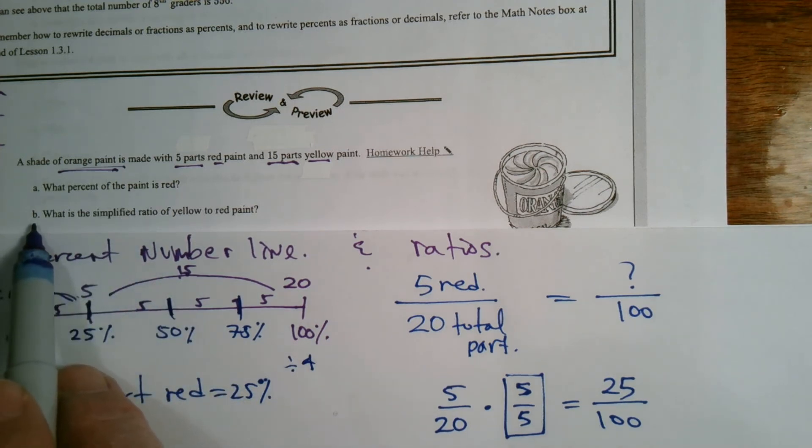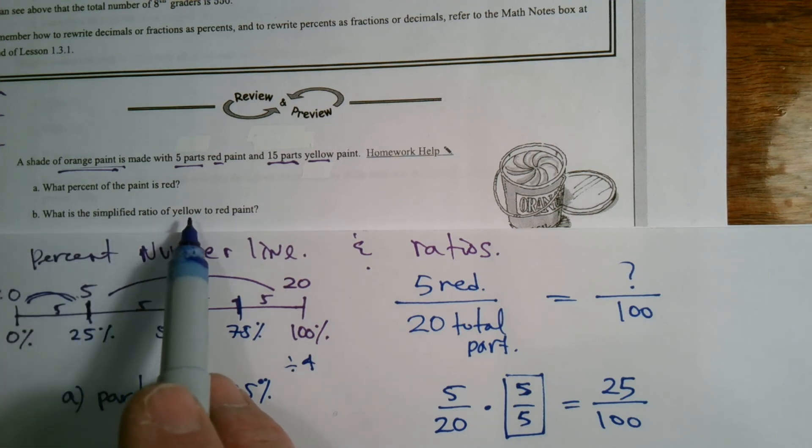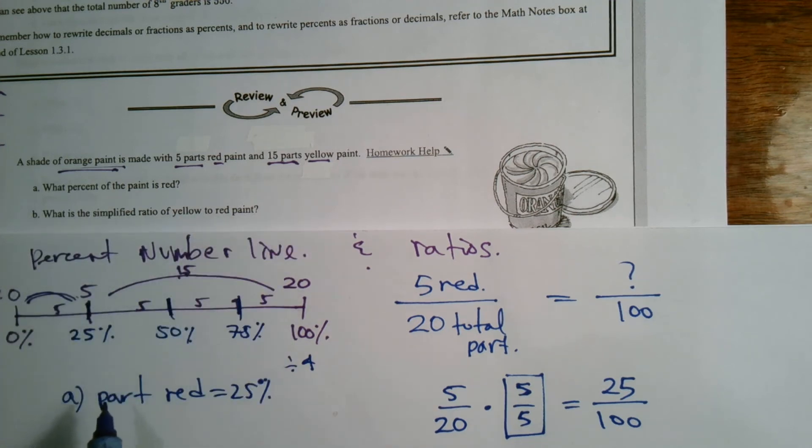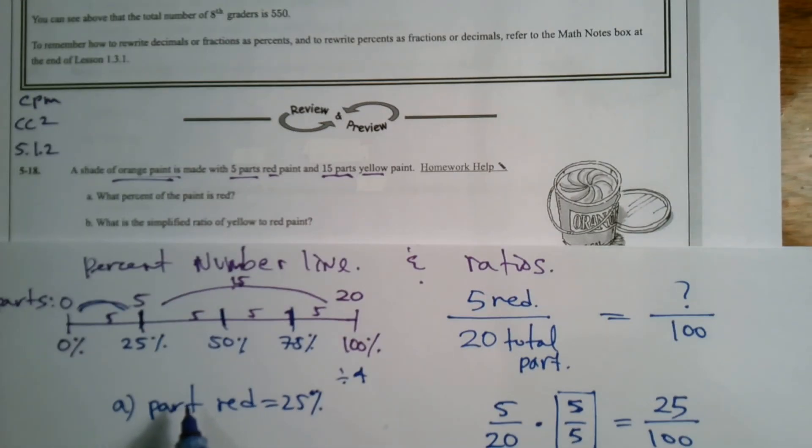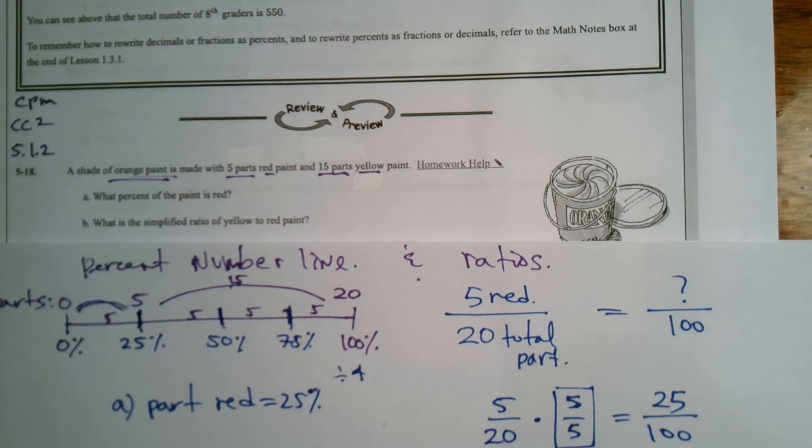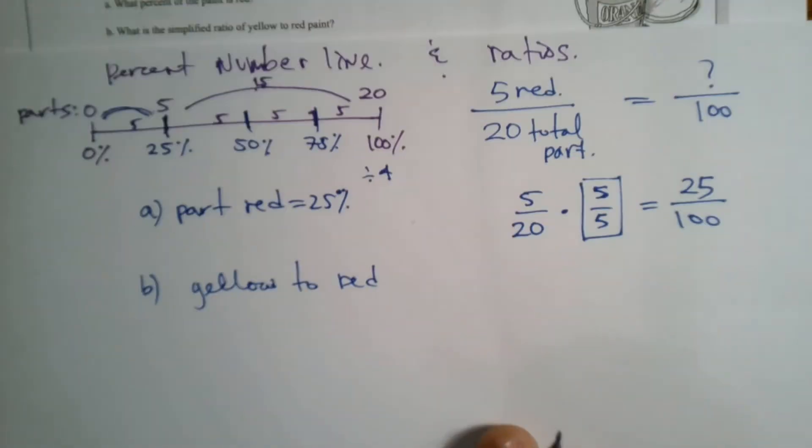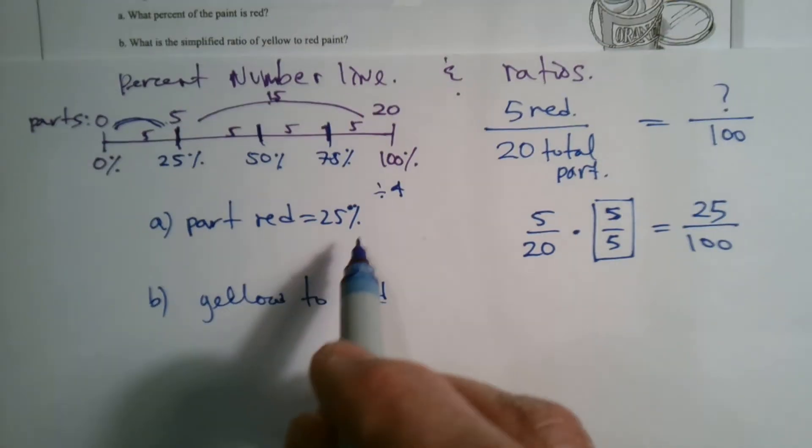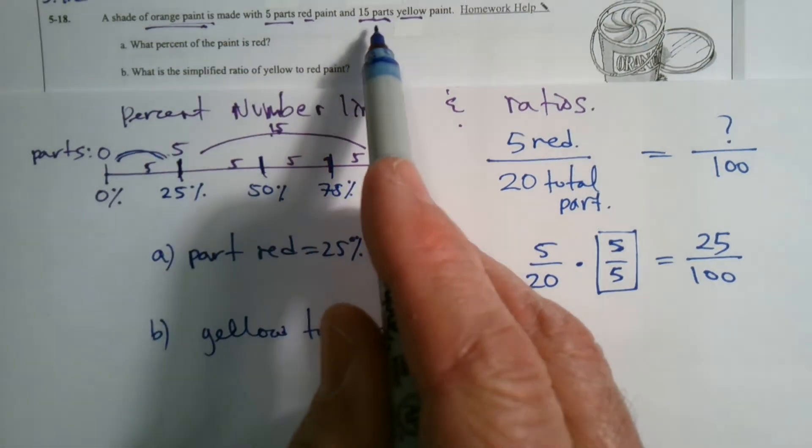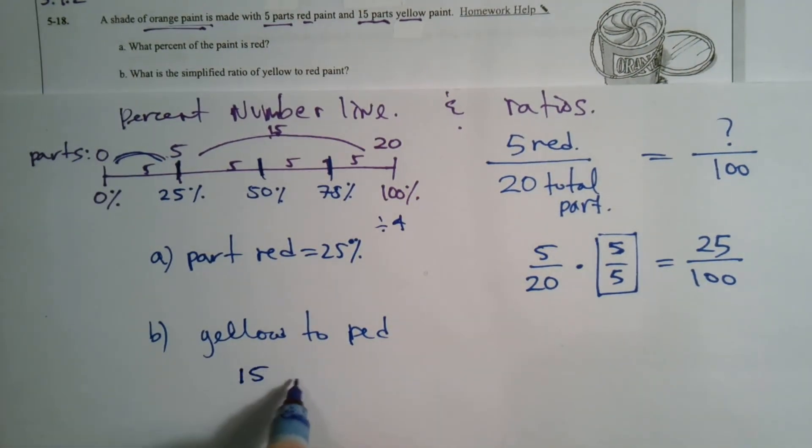So B. B says, what is the simplified ratio of yellow to red paint? So I have a ratio. My ratio is yellow to red. So my yellow to red. Yellow to red is my ratio I want to draw or create. So my ratio yellow to red. Well, we know that there are five parts red and 15 parts yellow. So 15 to five. That's my ratio. You can write a ratio using the colon or we can write the ratio using a fraction. Fifteen over five.